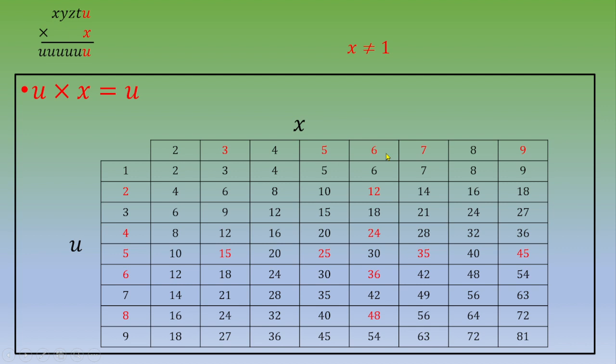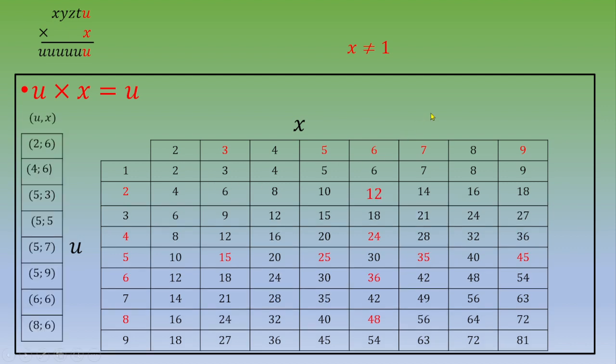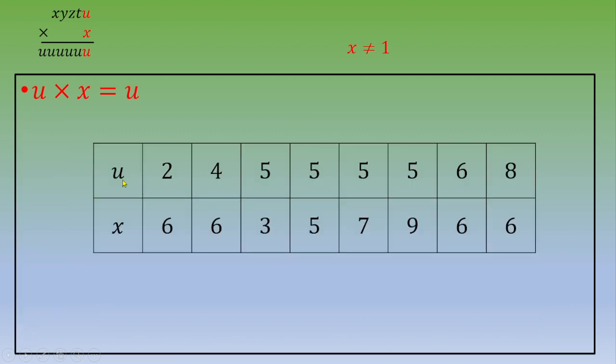So you've got different answers. So this is the recap of all the solutions. So you've got for one value of u, you've got one value of x. But in the text, this is x, y, z, t, u are different digits.